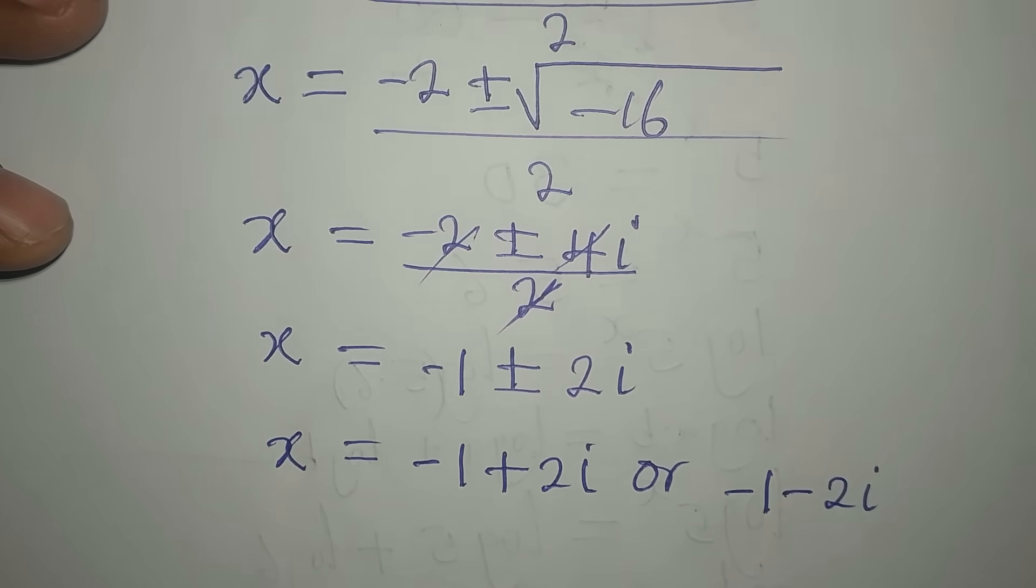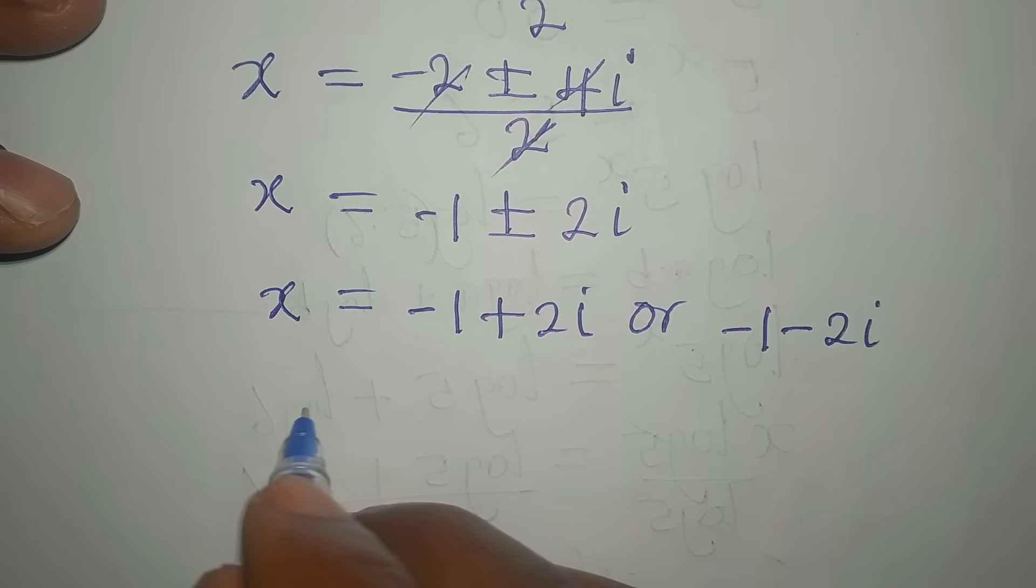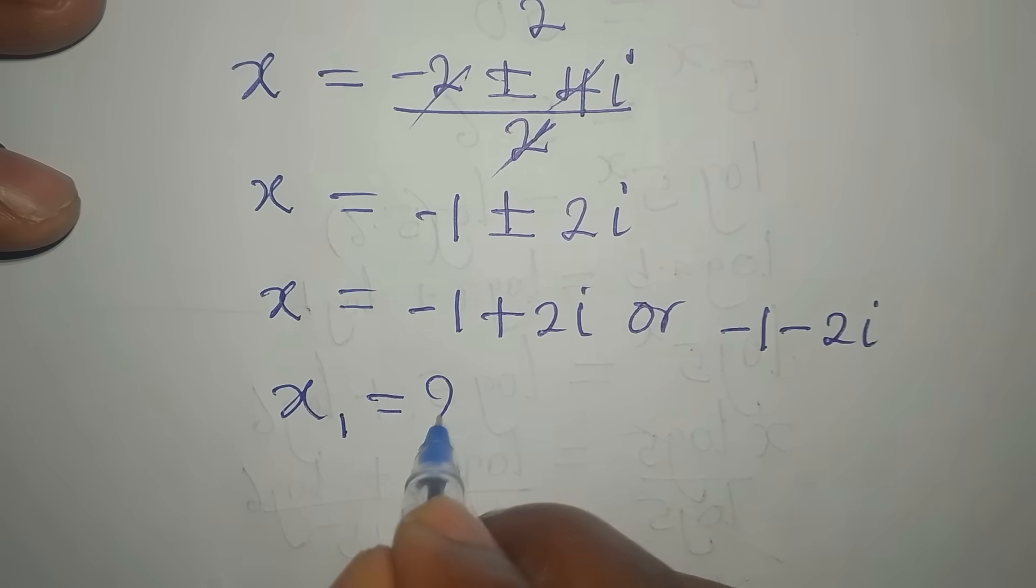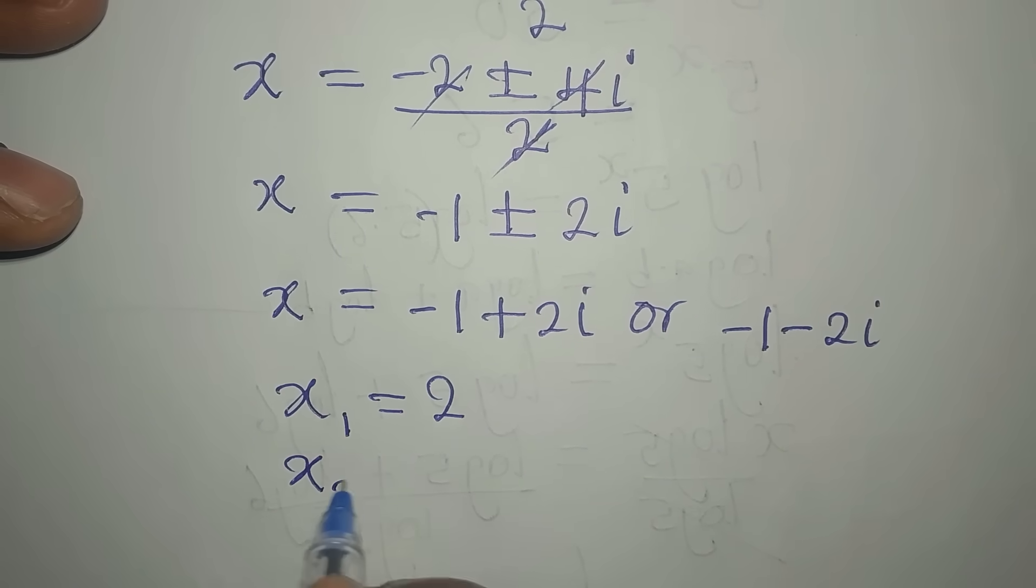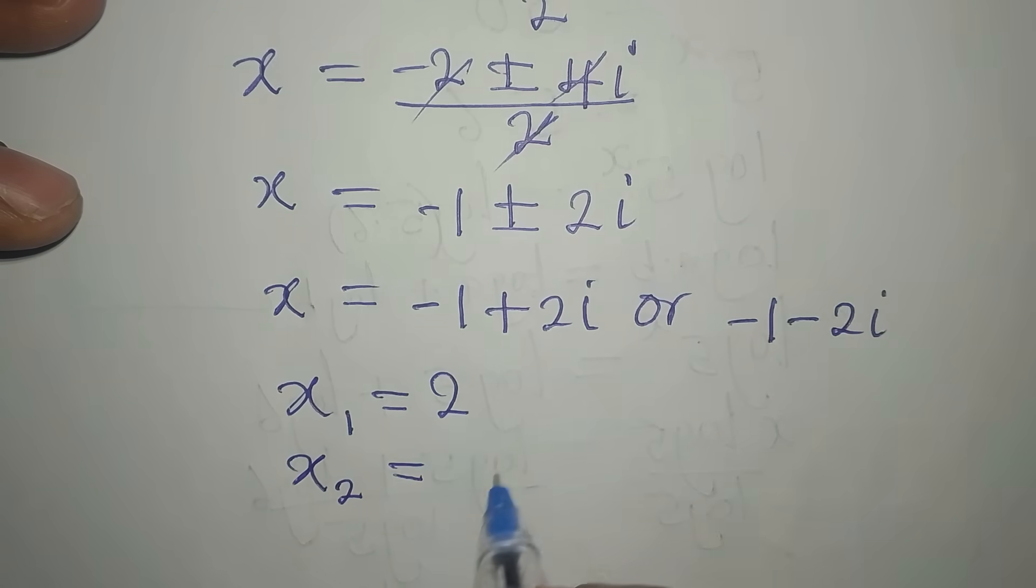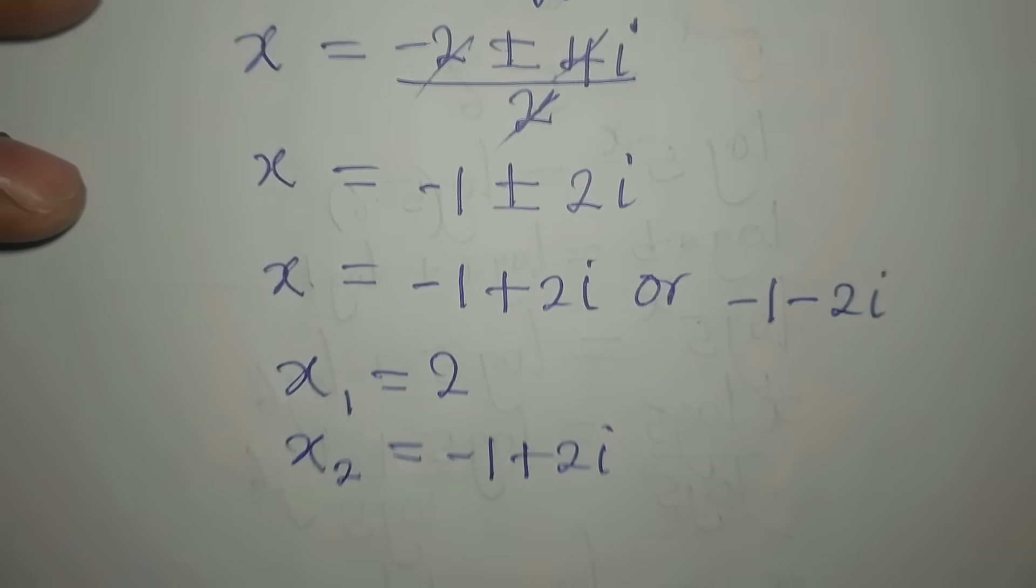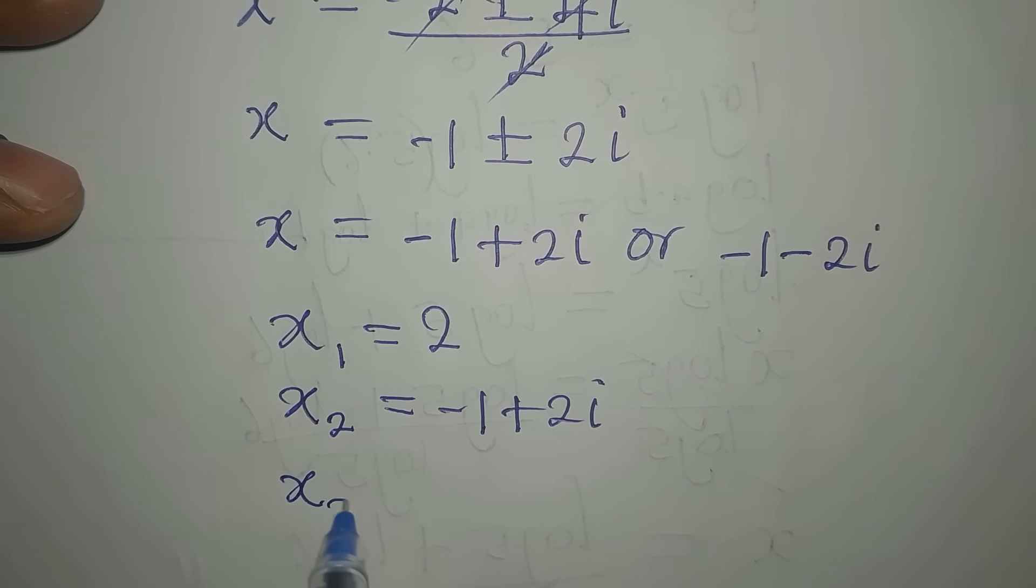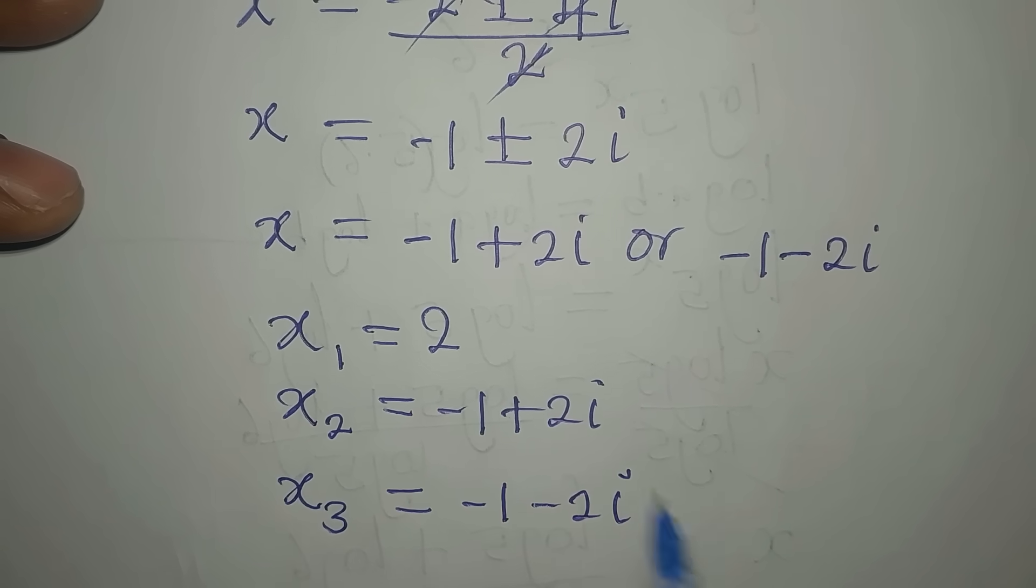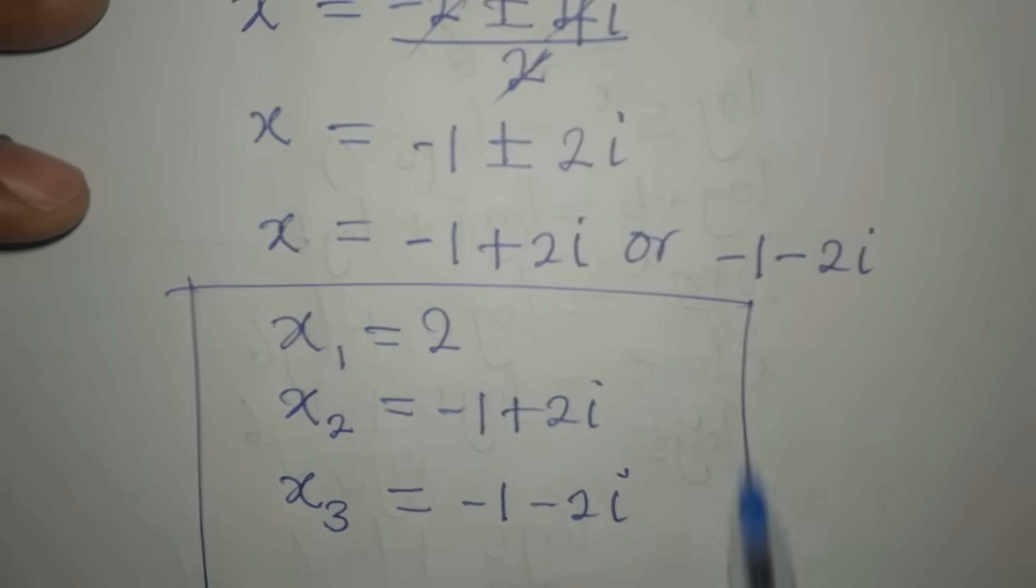Let's bring the three solutions together. We got x1 before, which is 2. Now we have our x2, which is minus 1 plus 2i. Then we have our third solution x3, which is minus 1 minus 2i. These are the three solutions.